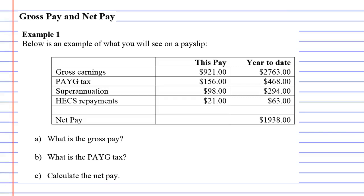Gross pay and net pay — example one. Below is an example of what you'll see on a payslip. I've just made this up, and payslips usually actually have a lot more information. It's quite hard to find the information that you need all the time anyway, so we're going to look at this payslip. We've just got three questions to look at.